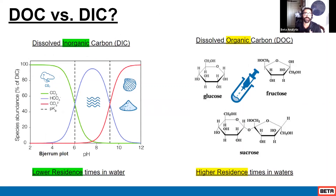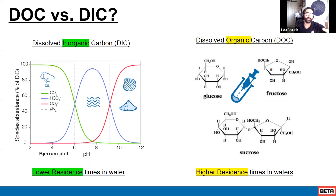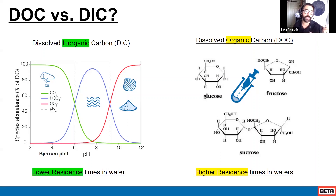When we talk about dissolved inorganic carbon, we're actually specifically referring to a small range of carbon compounds: CO2, bicarbonate, carbonic acid, and carbonate. These are usually in solution depending on the pH.